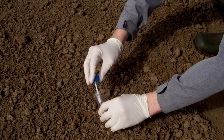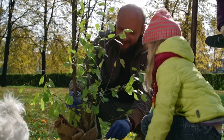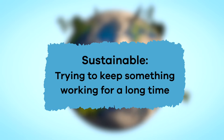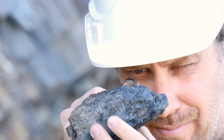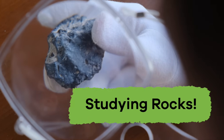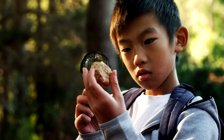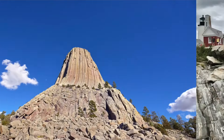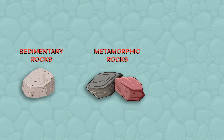It's important that we study the earth so that we know how it has changed, or could change over time, and what we can do to help keep it sustainable. Sustainable means we are trying to keep something working for a long, long time. Today, we will focus on just one job of a geologist: studying rocks. There are three main types of rocks: sedimentary, metamorphic, and igneous.